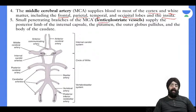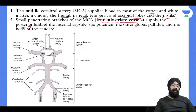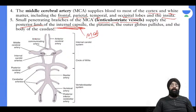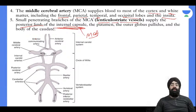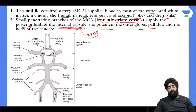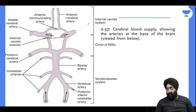The posterior limb of the internal capsule is supplied by the MCA territory. An MCA territory infarct affects the frontal, parietal, and temporal cortex — most of the white matter and cortex. The posterior limb of the internal capsule, putamen, and globus pallidus are also supplied.